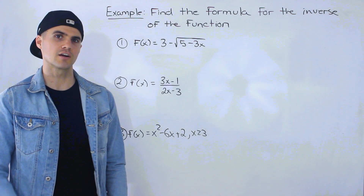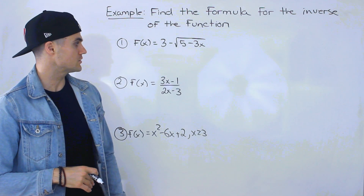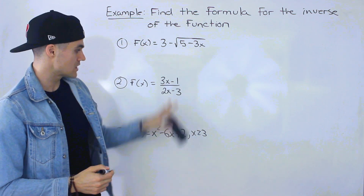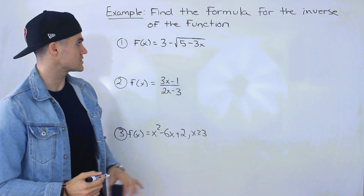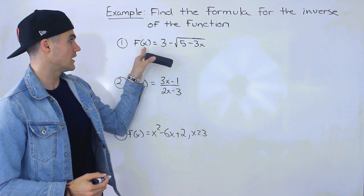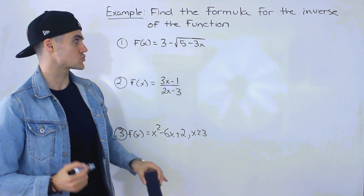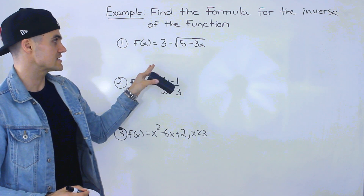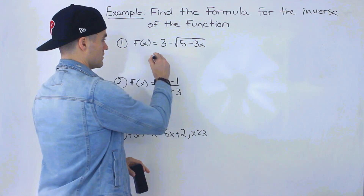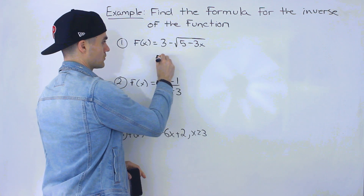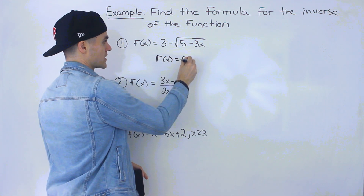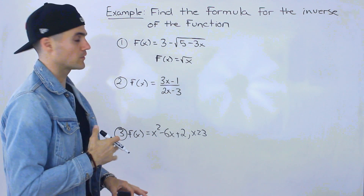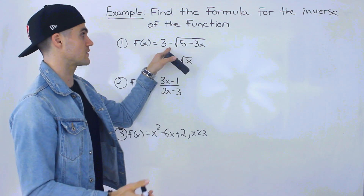Welcome back. In this video we're going to continue with inverses. We need to find the formula for the inverse of each of these three functions. The first function is f(x) = 3 minus the square root of 5 minus 3x. Notice this is just the radical parent function — the square root of x — transformed. So first I'm going to find the domain and range of this function.